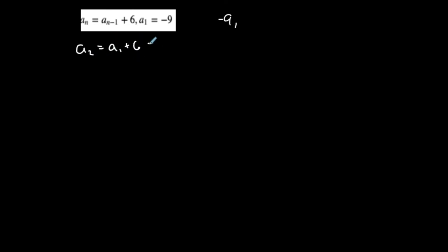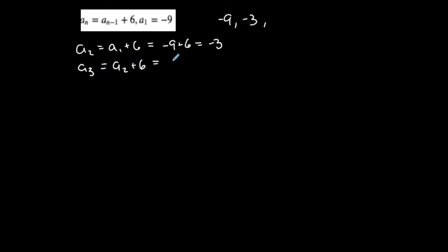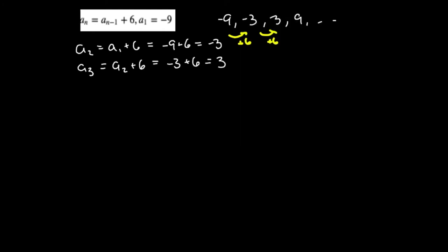I want to find the nth term in explicit form. Let's find the first few terms: a1 is negative 9. They tell me a2 equals a1 plus 6, so negative 9 plus 6 is negative 3. Then a3 equals a2 plus 6, so negative 3 plus 6 is 3. It looks like I'm adding 6 to each term to get to the next one, which means it's arithmetic. The common difference is 6 and the first term is negative 9.